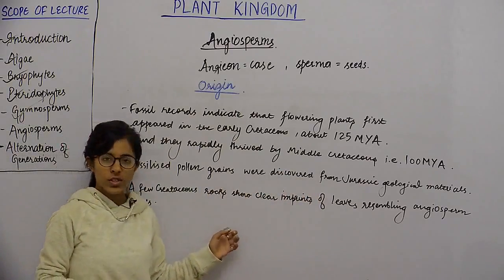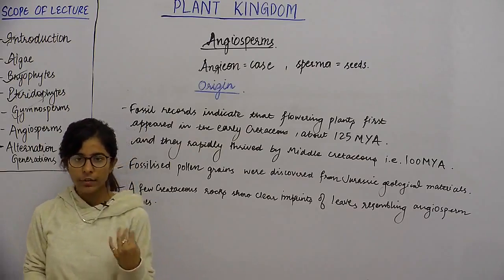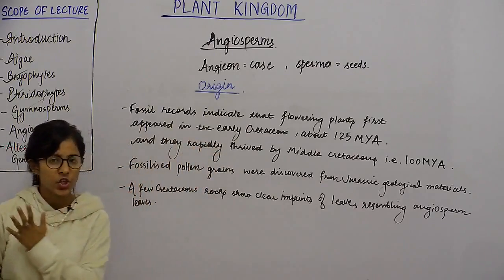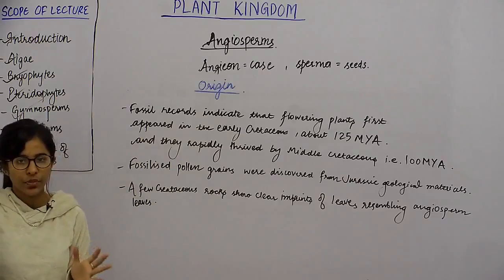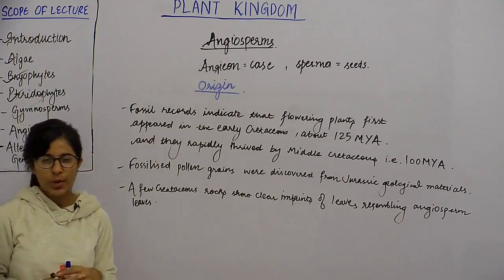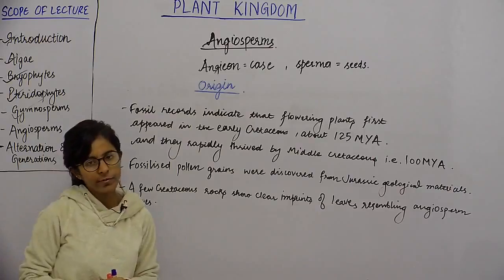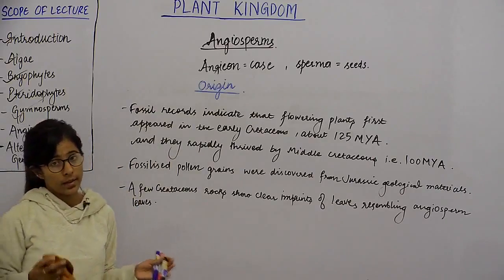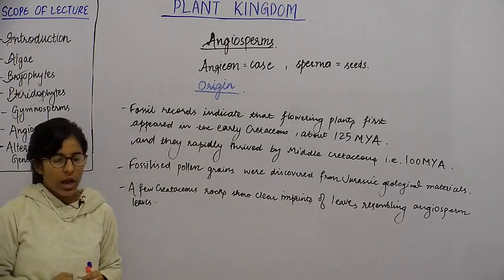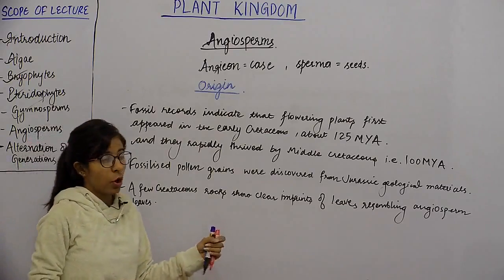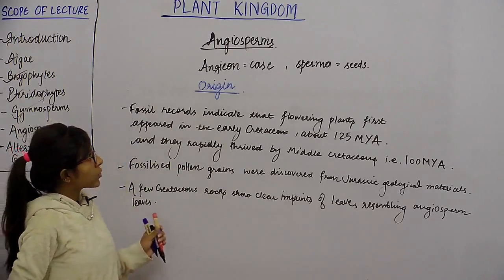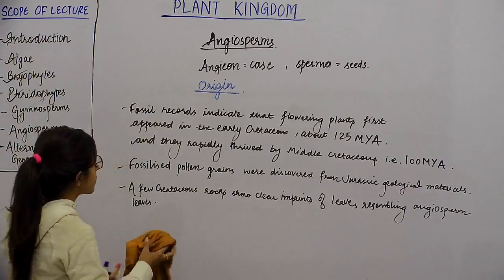The pollen grains confirm that angiosperms arrived in the early Cretaceous period. This was about the origin of angiosperms — the bloom of angiosperms as we know it today.